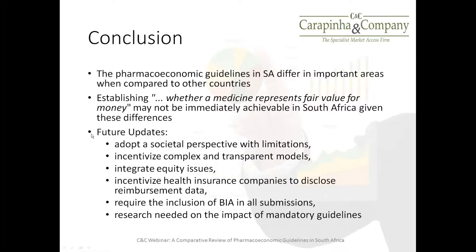I'm suggesting that future updates to the pharmacoeconomic guidelines include a couple of areas. First is adopting a societal perspective with limitations, which is what a lot of high-income and middle-income countries do — South Africa seems to have gone in the opposite direction of adopting only a third-party perspective, that is the perspective only of medical schemes. The second future potential update is incentivizing complex and transparent models, which is the preference of most high and middle-income countries, unlike South Africa's preference for simple models.